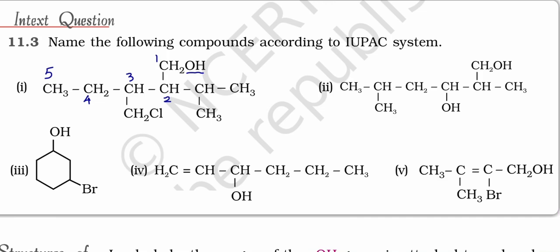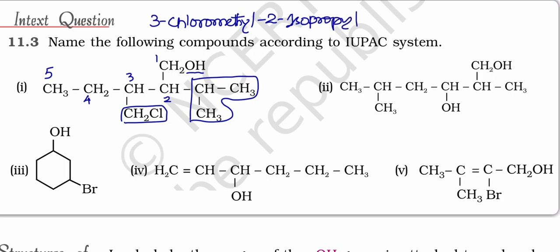This is the longest possible chain. In that, second place is having an isopropyl group. Nowadays we are accepting this isopropyl name. Second place isopropyl and this is called chloromethyl. Third place chloromethyl - one carbon with chlorine group. Total five carbons are there. Pentane, in that first place is having OH group. Pentan-1-ol.